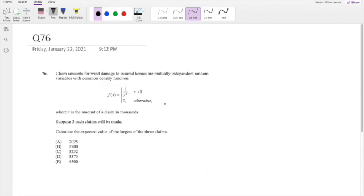So this is the claim amount, and there are actually three claims that follow this distribution right here. And we're asked to find the expected value of the largest of the three claims. I'm actually going to denote Y to be equal to the max of x1, x2, and x3.